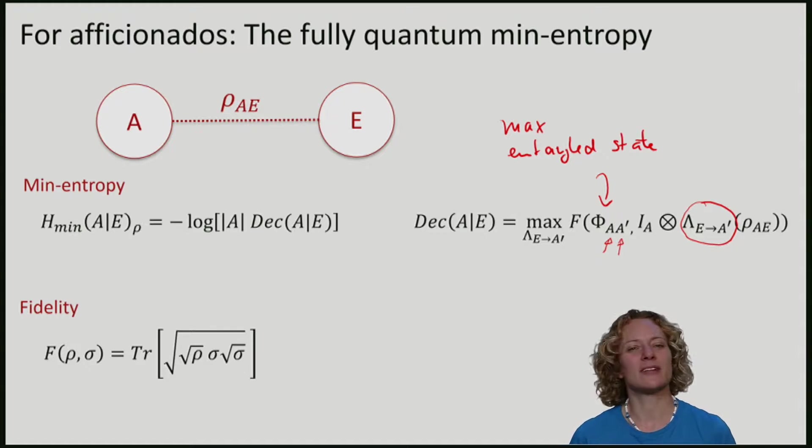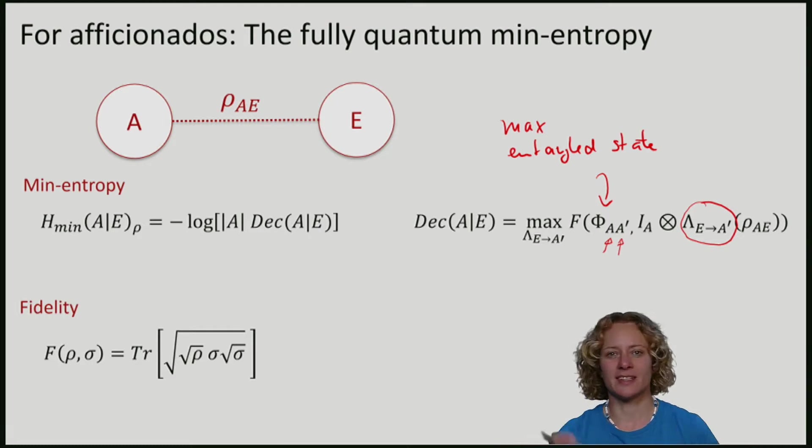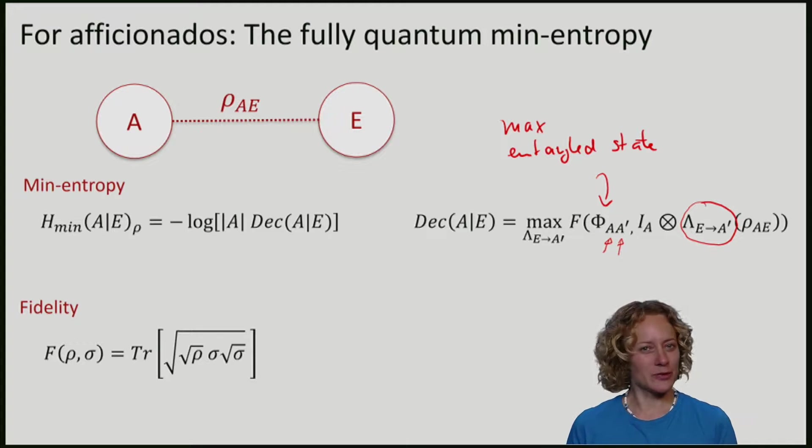It may not be obvious how this quantity is analogous to the probability of guessing. But if you think about it, note that the quantum analog is very similar. In the classical case, I wanted to guess x. I wanted to get as close as possible to being classically maximally correlated. Here, I want to bring myself as close as possible to what is quantumly maximally correlated with A, namely maximally entangled with A.